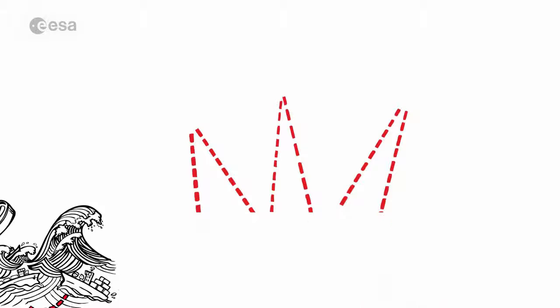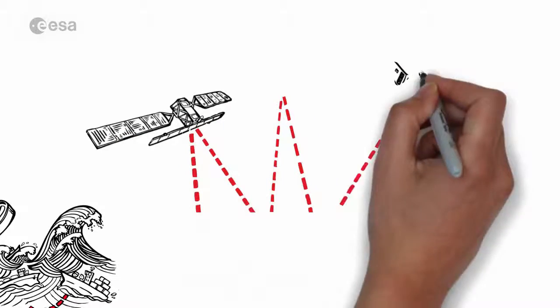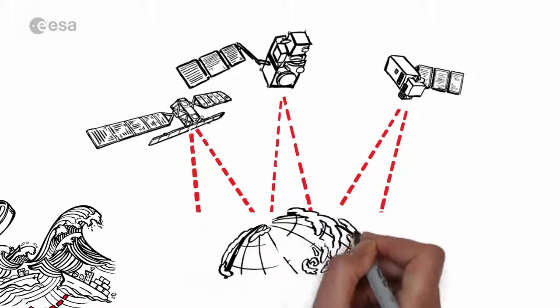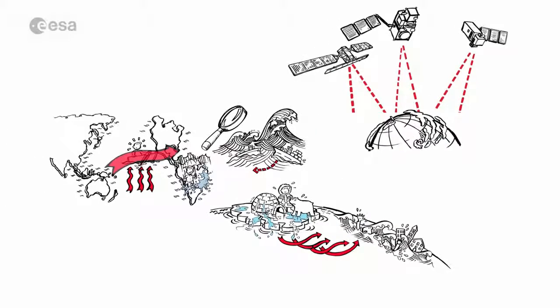Now the European Space Agency ESA, together with the European Commission and EUMETSAT, has launched its third Sentinel satellite, a satellite dedicated to the oceans and the properties of water.